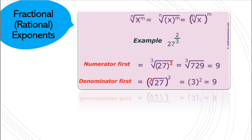Now it's time for a new exponent law: fractional exponents, which we also call rational exponents. The original would be x to the power of m over n. If you want to change that back into a root — a radical — the top number stays with the x as x to the power of m, but the fractional component n goes in the hook of the radical.